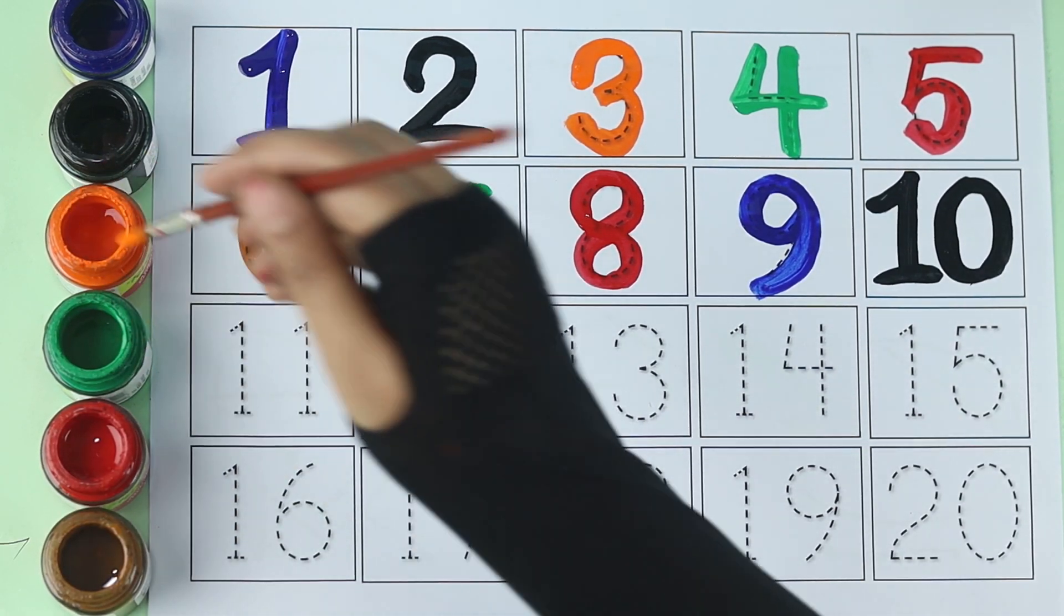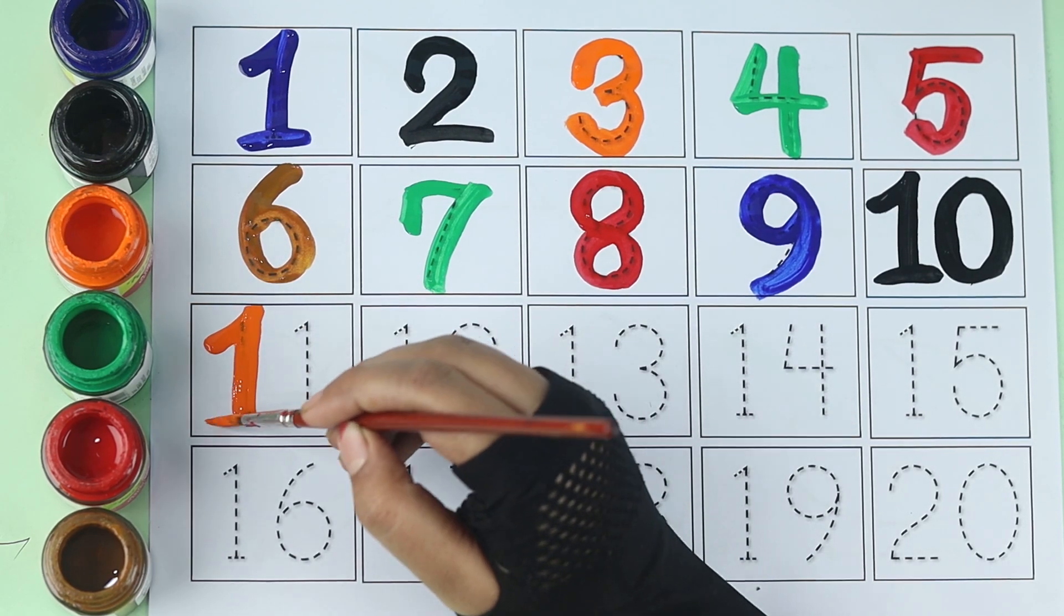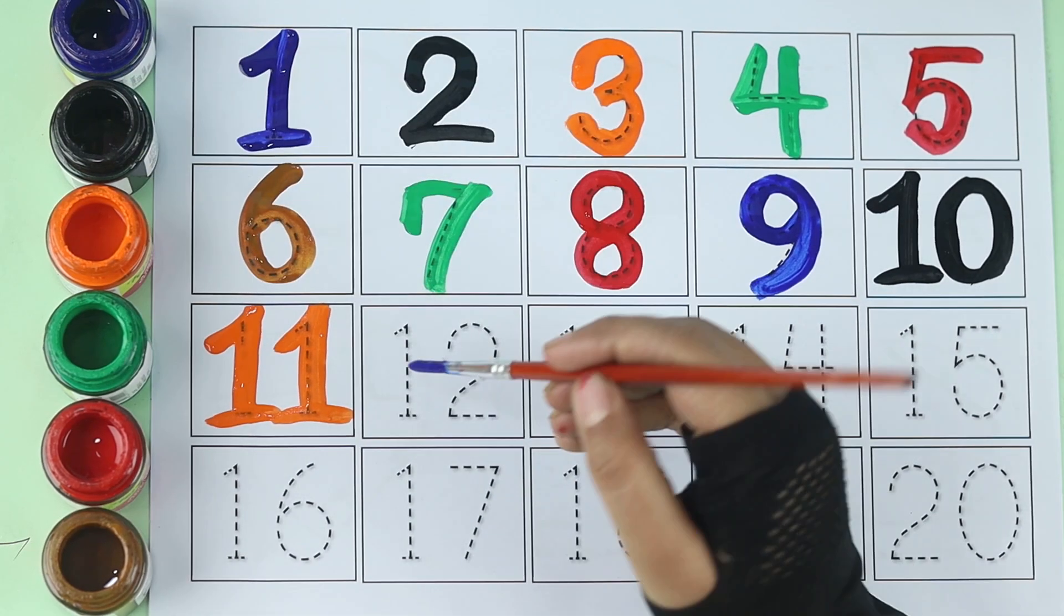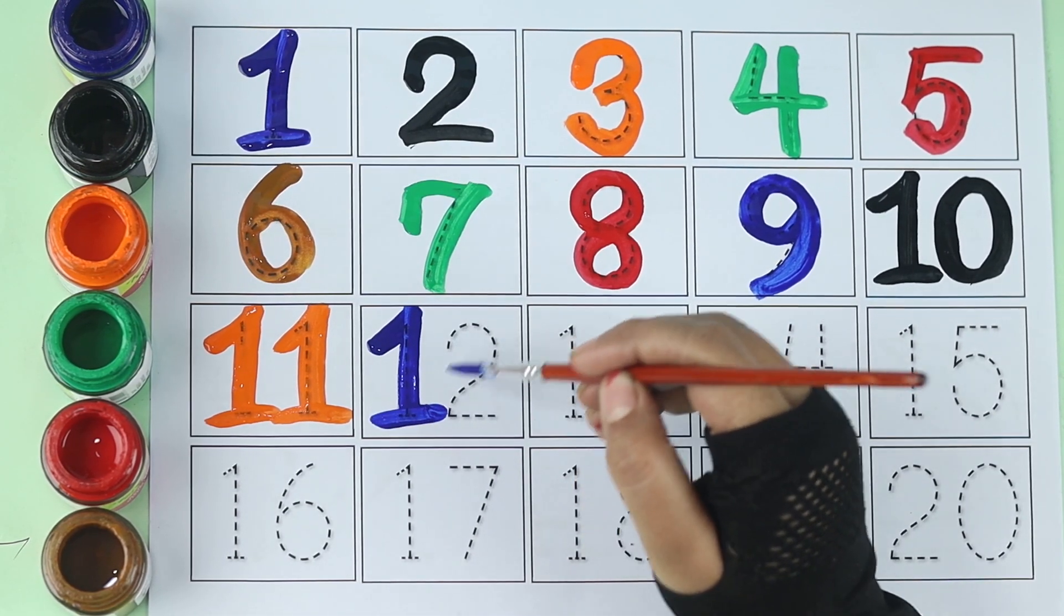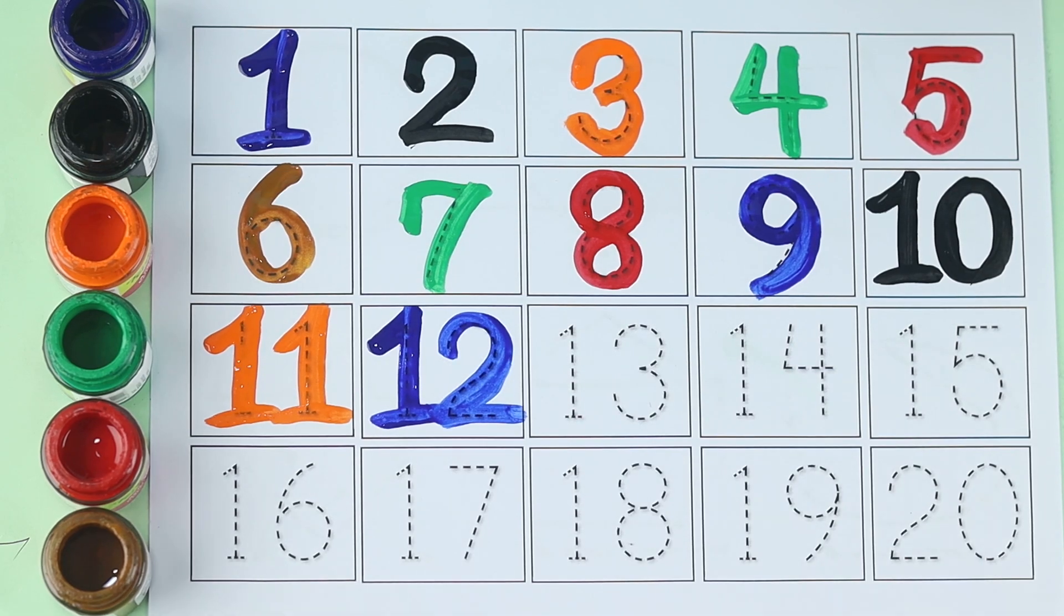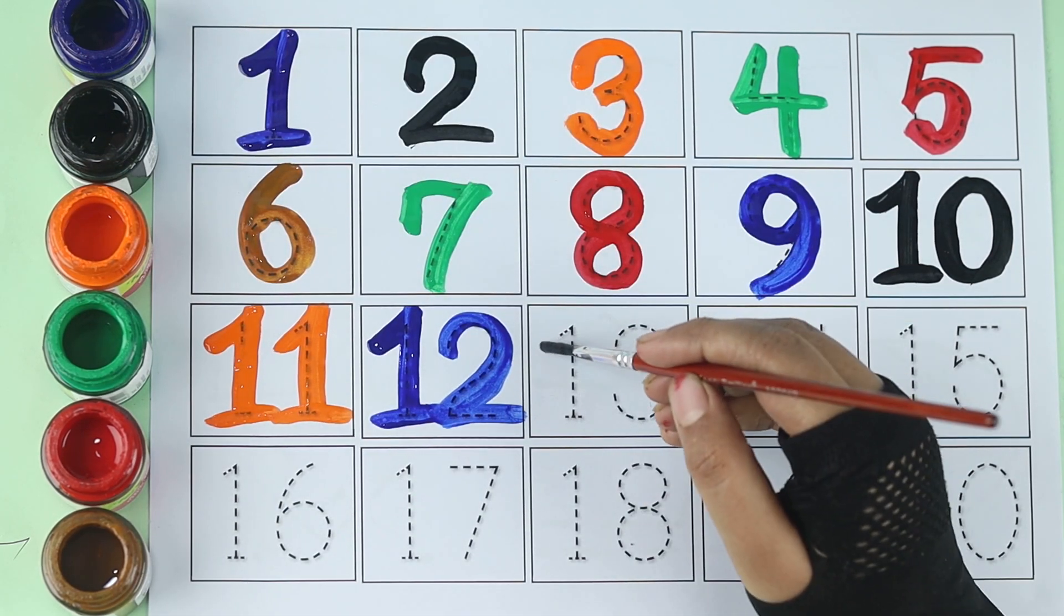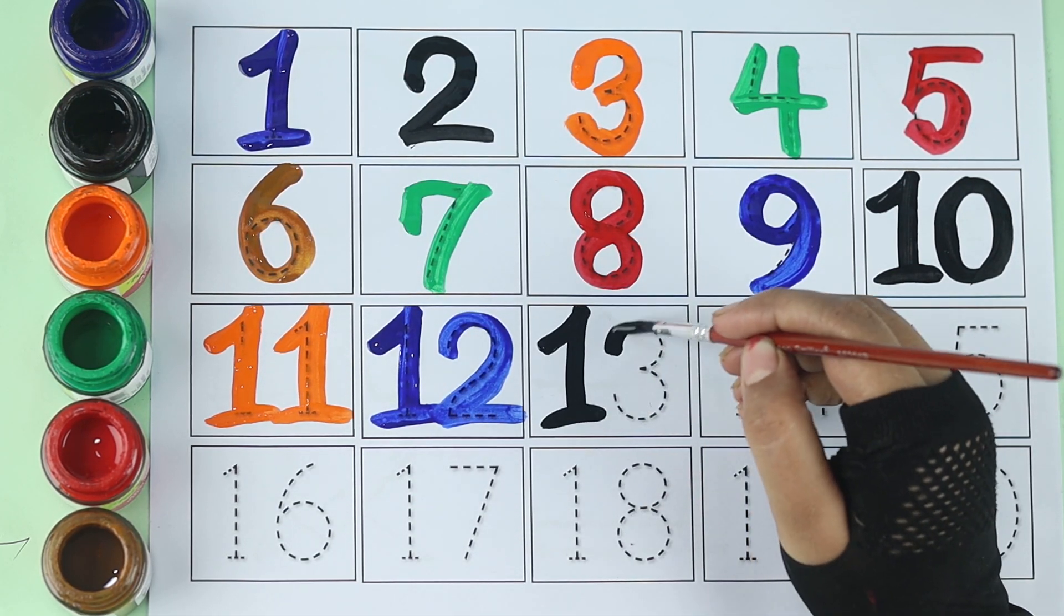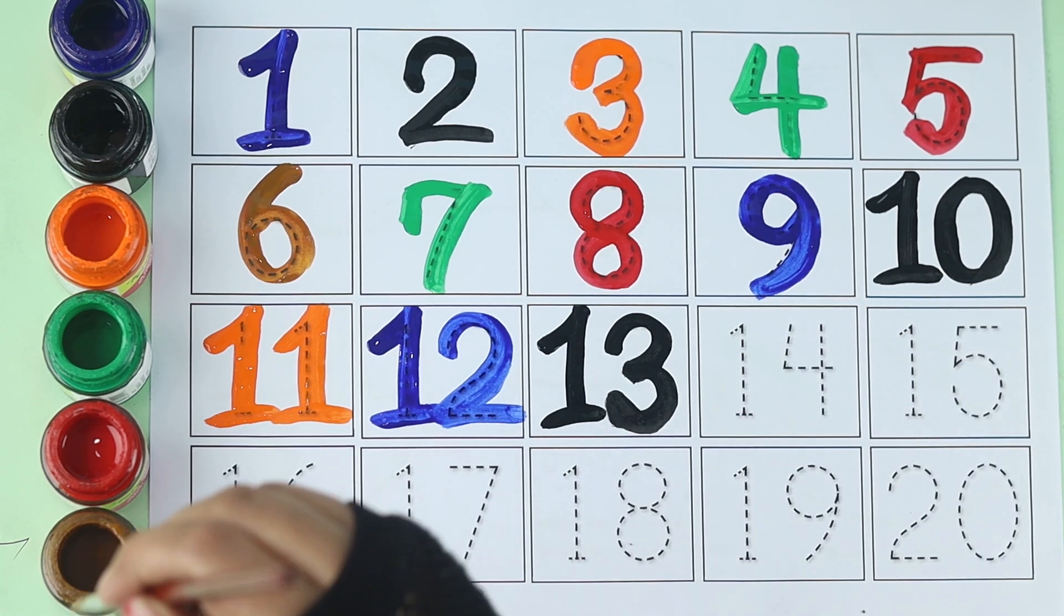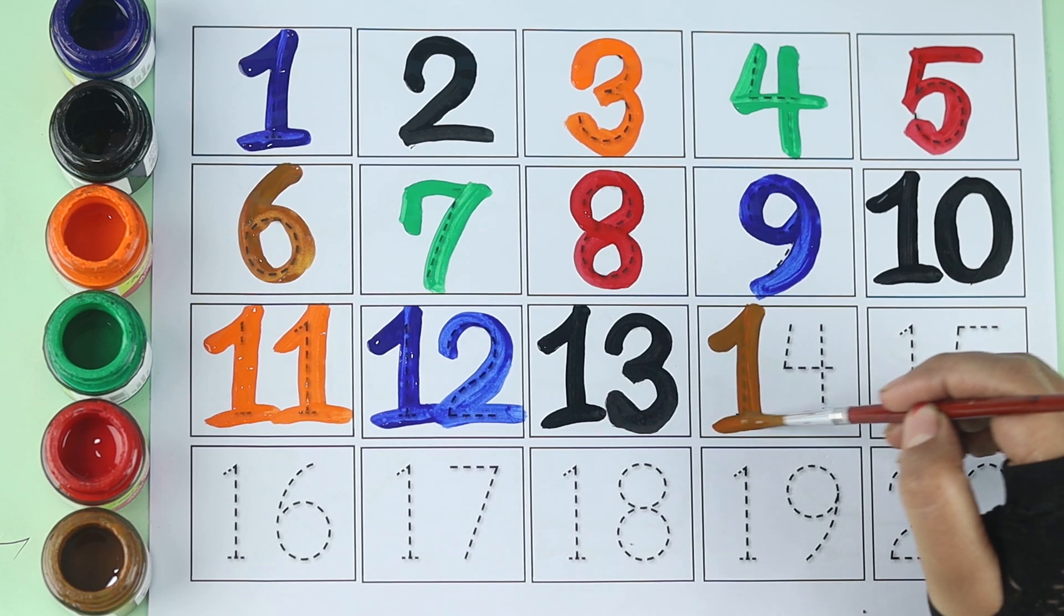Orange color, eleven. Blue color, twelve. Black color, thirteen. Brown color, fourteen.